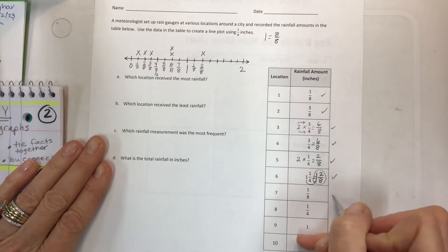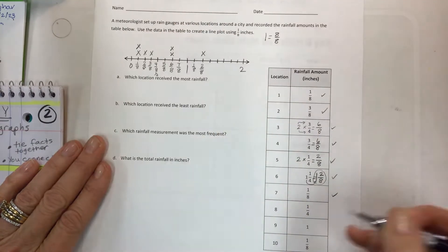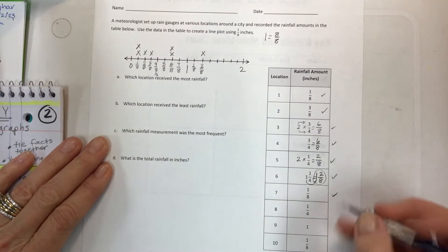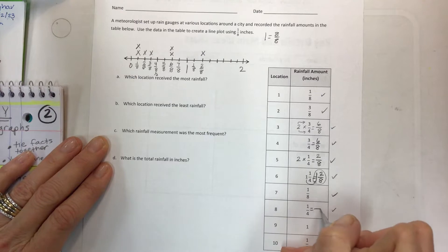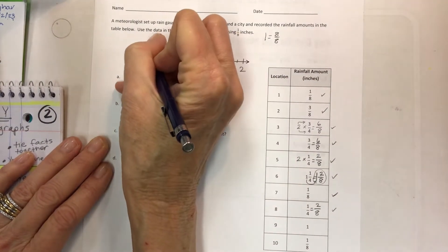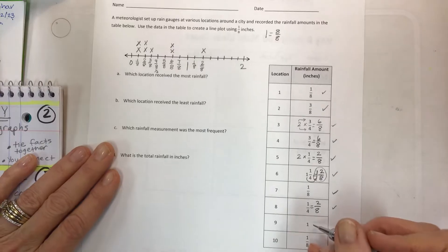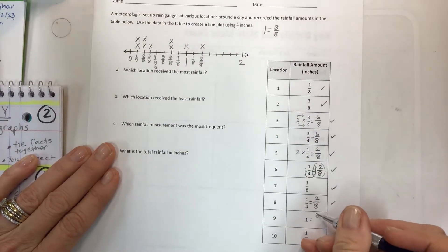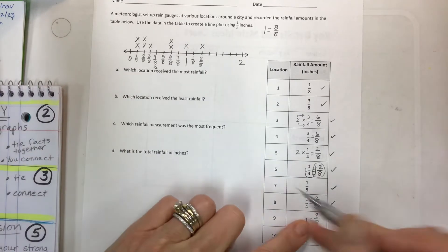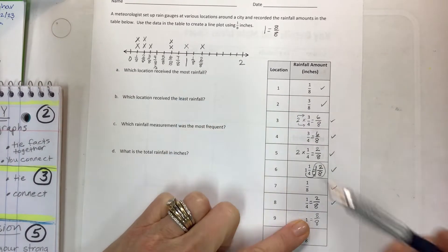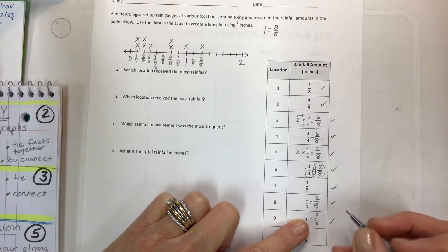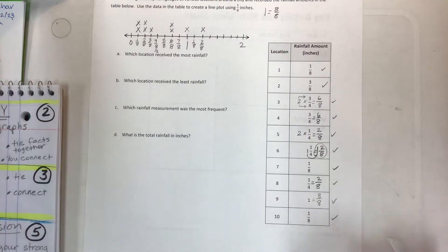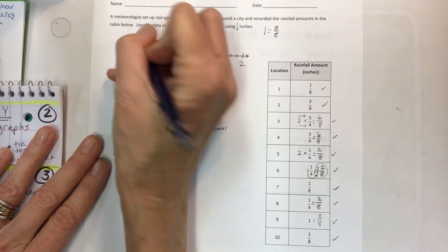I also need eighths for my one-fourth but I know that one-fourth is equal to two-eighths. It's not just two-eighths though. It's one and two-eighths. Moving over to here, this is one and one-eighth. So this is one and two-eighths. So my x for this one goes here. Back to the one-eighth. I have another one down here. One-fourth, which we already know is two-eighths. Then we have one, which is equal to eight-eighths. And then we have one more at one-eighth. I think we have a winner.